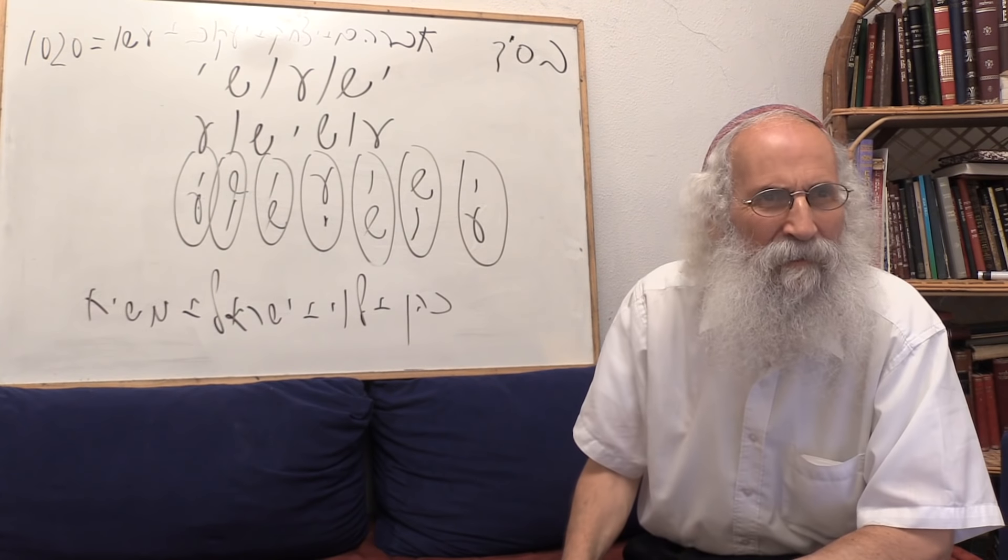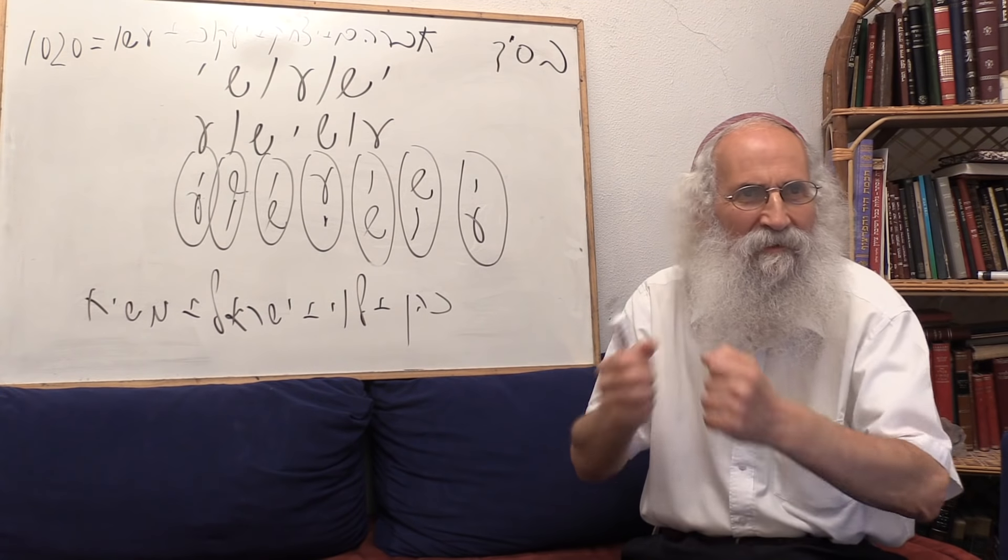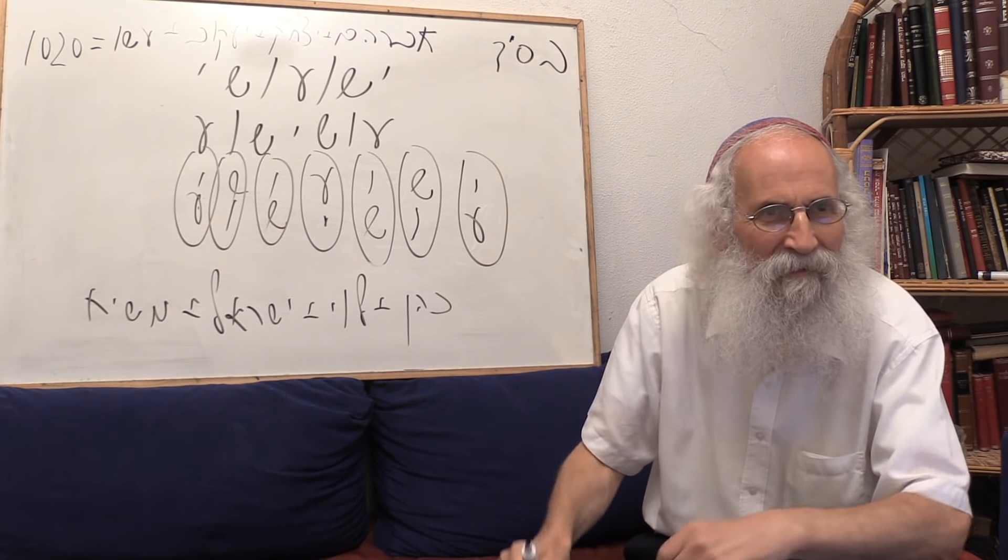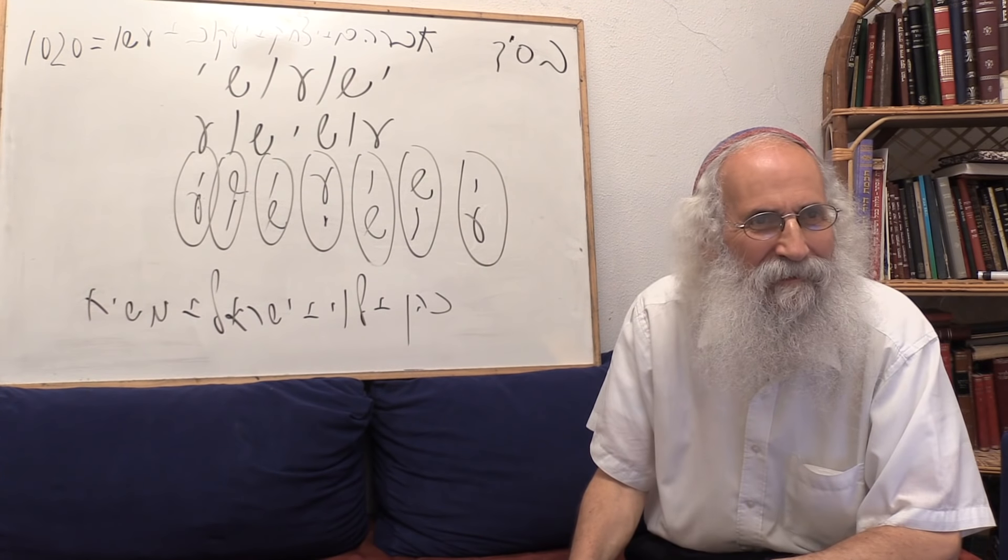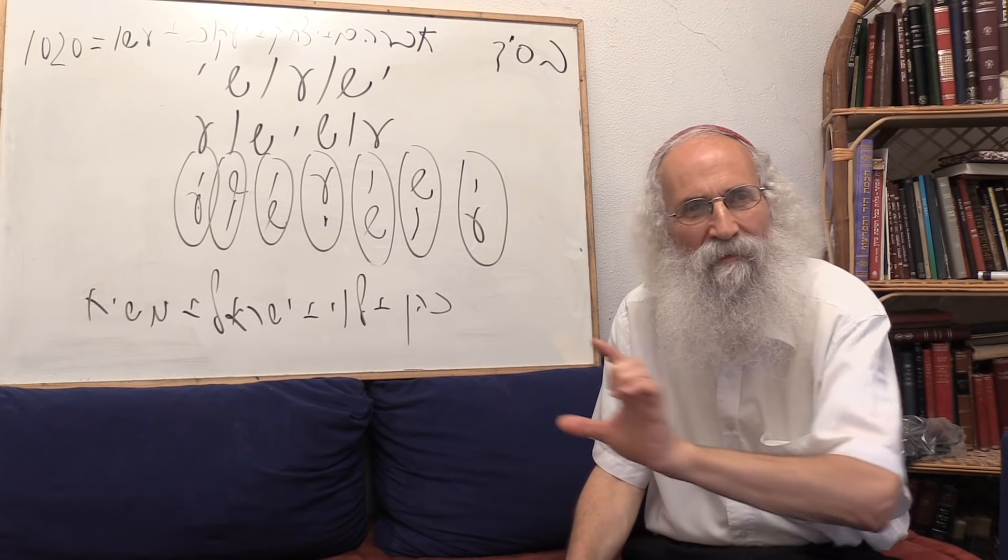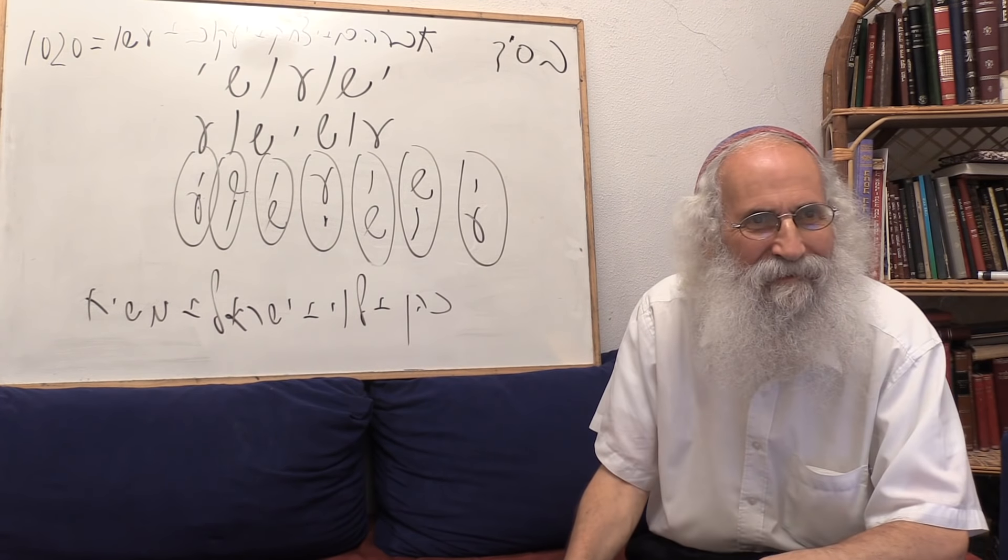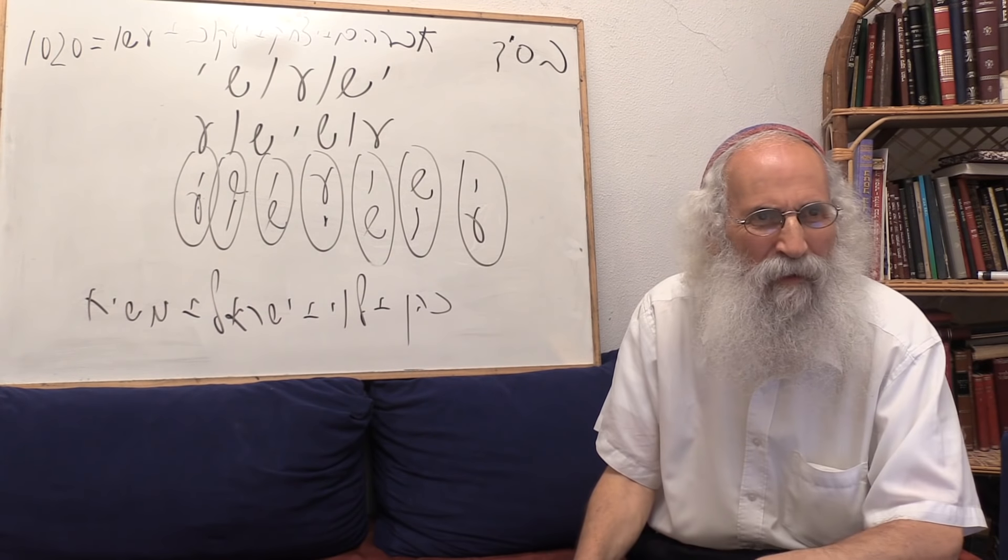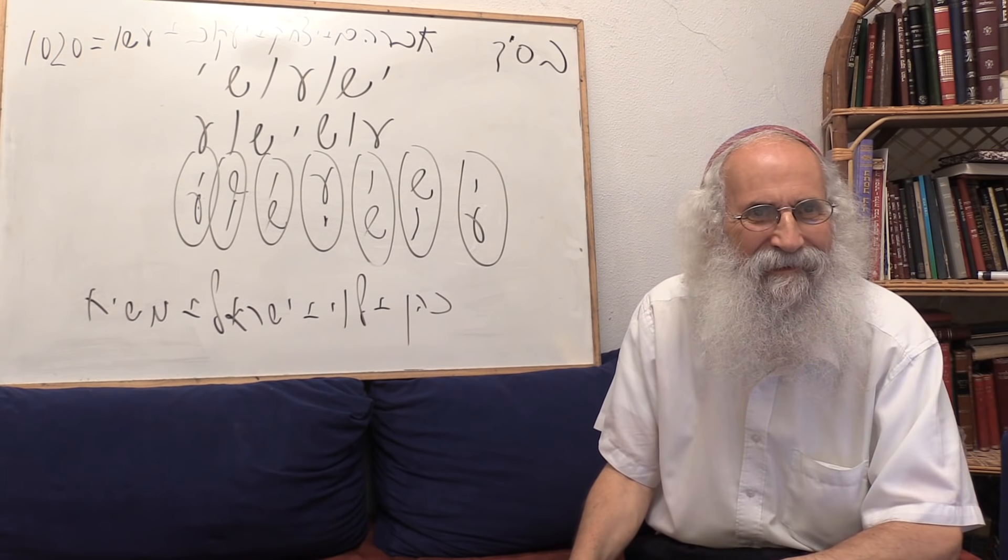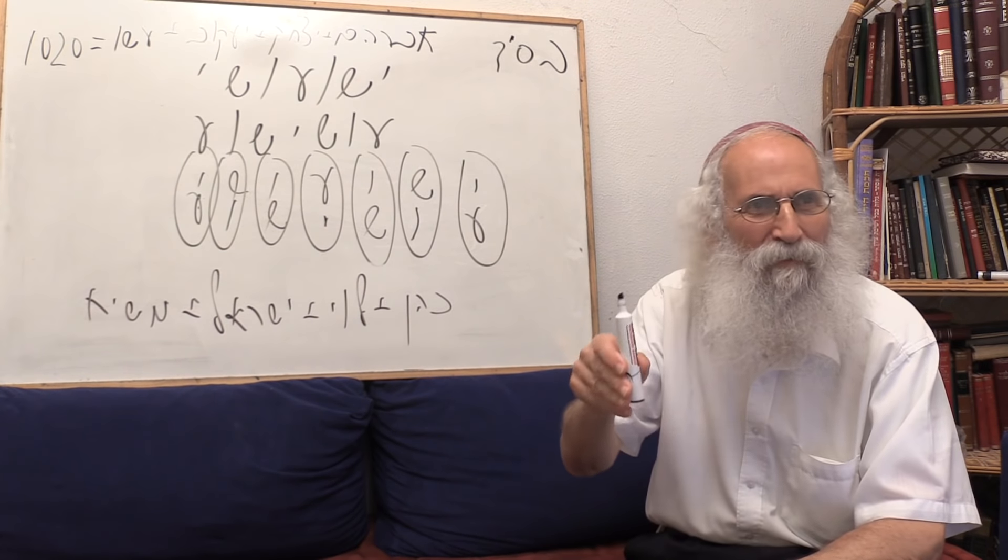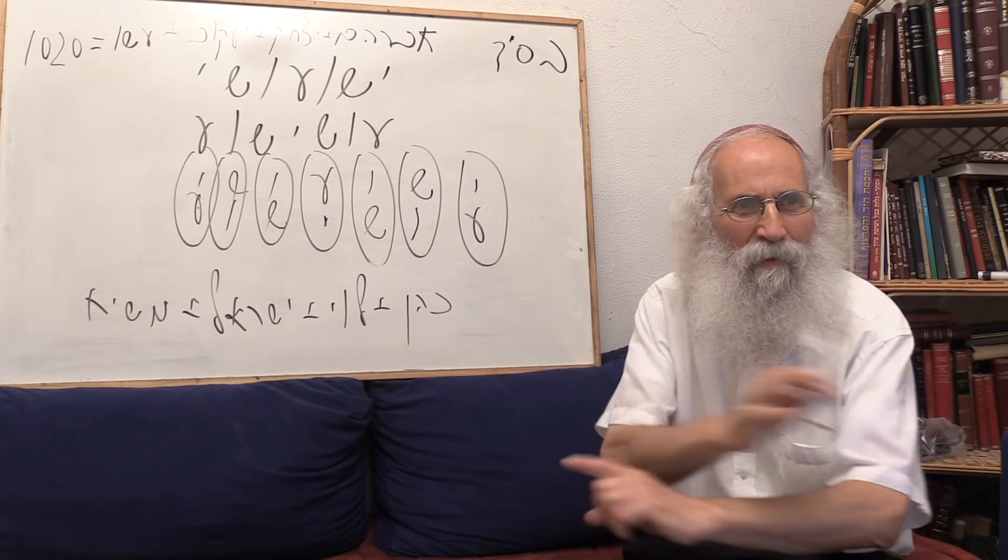It's the four kinds, Arba'at HaMinim, in Sukkot. Four species. All the four species, they all represent the four sons, or the basis of Christianity. Each one, we take one of these concepts of four, we can make from them seven. And we can make from them seven in two opposite ways. Sometimes the smart will be in the middle, sometimes the bad will be in the middle. We can always switch.